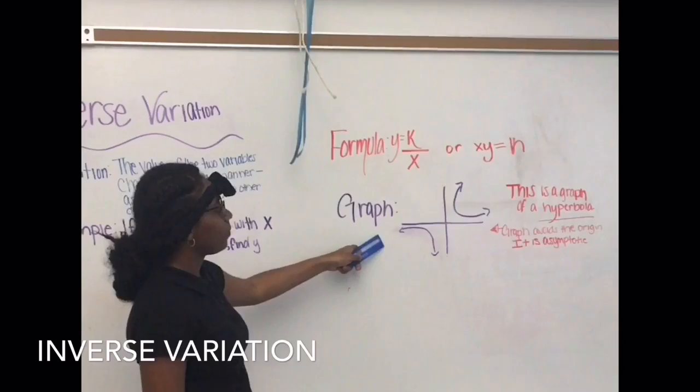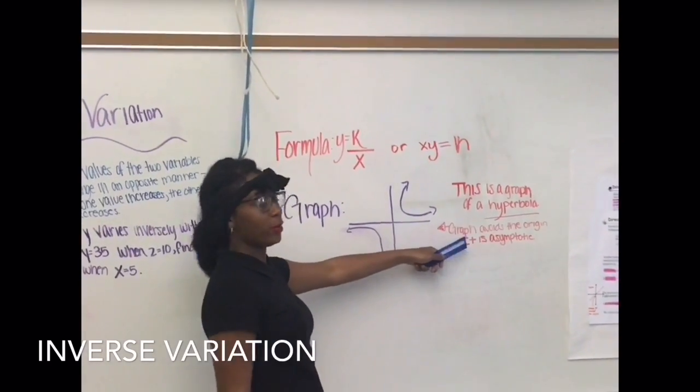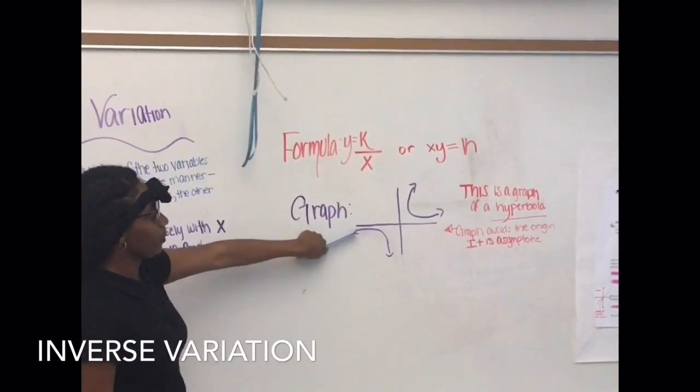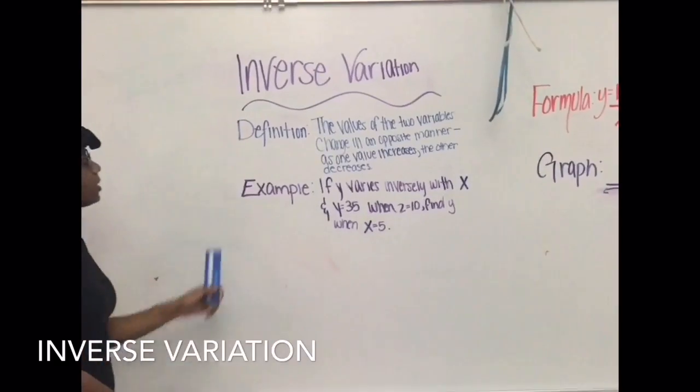Okay, this is the graph for inverse variation. This is asymptotic, and the graph is a hyperbola. It avoids the origin. And this is the example.